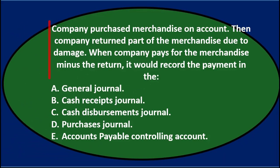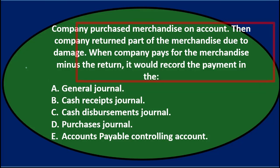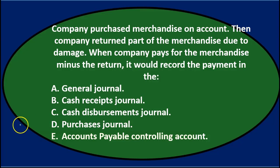A company purchased merchandise on account, then returned part of the merchandise due to damage. When the company pays for the merchandise minus the return, it would record the payment in: A) general journal, B) cash receipts journal, C) cash disbursements journal, D) purchases journal, or E) the accounts payable controlling account.